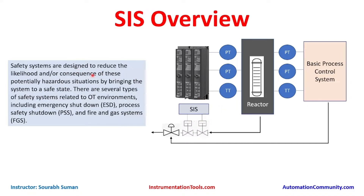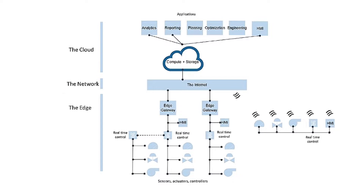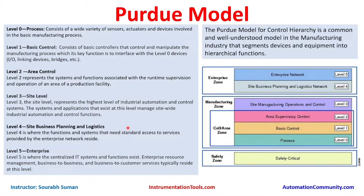We started the SIS overview — why SIS is so critical and why triple redundancy is used. We also learned about IoT systems: what edge computing is and how computing is distributed across the complete network from bottom to top, which is why it's called edge computing.